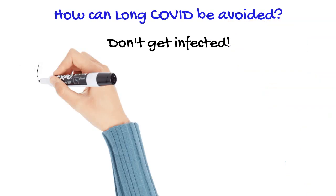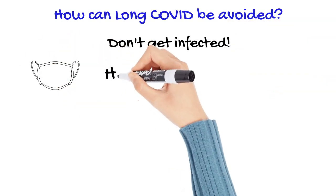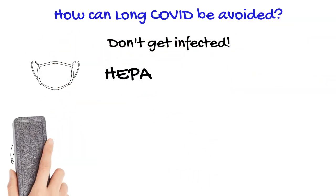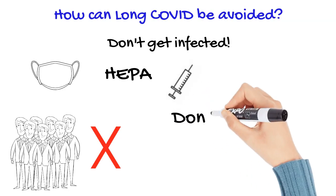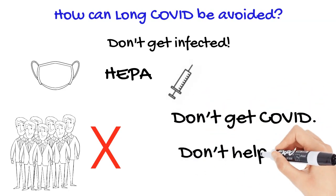So how do you avoid long COVID? Don't get the virus. Wear a protective mask. Use proper ventilation. Run HEPA filters. Avoid large gatherings. Get vaccinated if you haven't already done so. Even if you already got infected, try to avoid reinfection because it can increase your risk of developing long COVID. Don't get COVID. Don't help spread COVID.